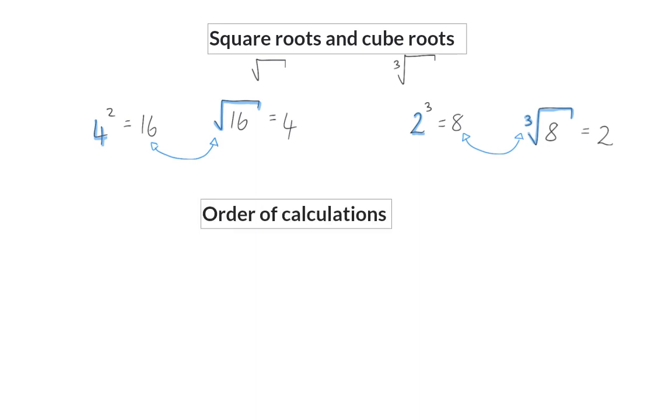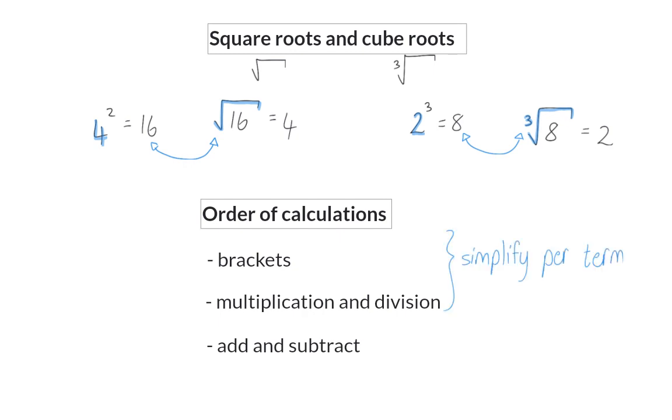The last previous knowledge that is important, is order of calculations, so you need to know that the order is, you always first do brackets, then multiplication and division, and lastly you add and subtract. This means that you always first simplify per term, and then you add and subtract your like terms.